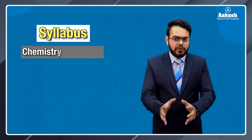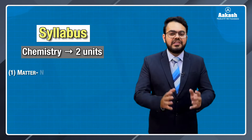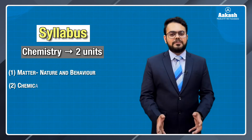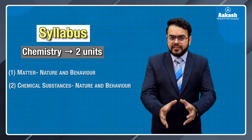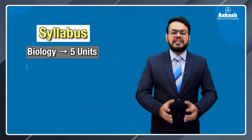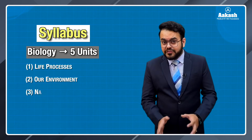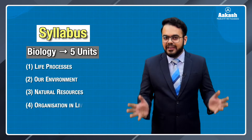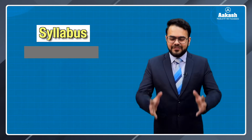Now we will talk about the syllabus of NSEJS in brief. For chemistry, we have two important units: first is Matter — Nature and Behavior, and second is Chemical Substances — Nature and Behavior. For biology, we have five units: Life Processes, Our Environment, Natural Resources, Organization in the Living World, and Food Production.